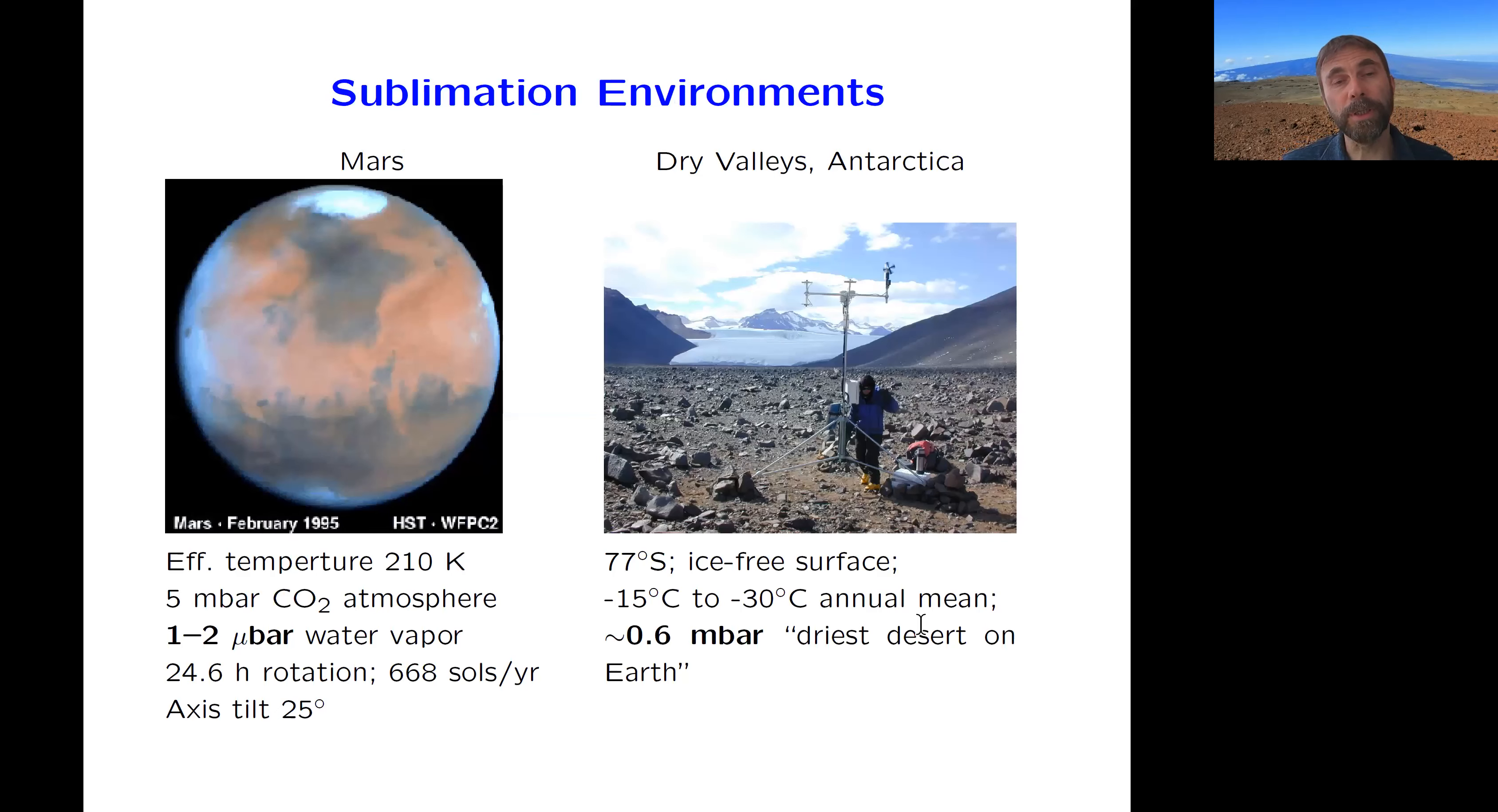So here is a photo of Mars and a photo of one of the dry valleys in Antarctica with a meteorological station. And the most significant difference between the two in terms of near-surface ice is that Mars is much drier. It's colder, and therefore even at saturation levels, it's much drier.